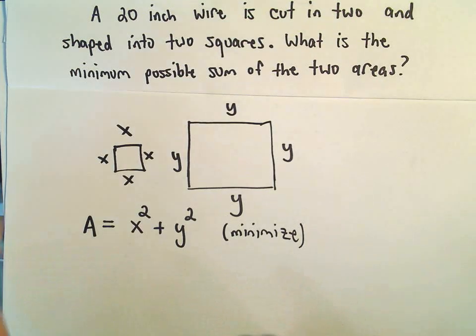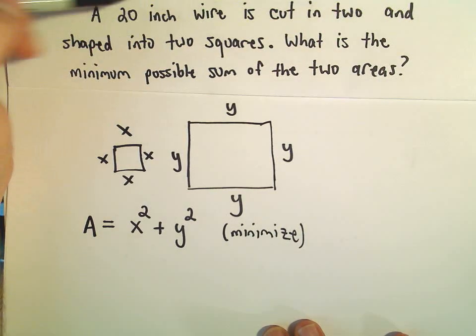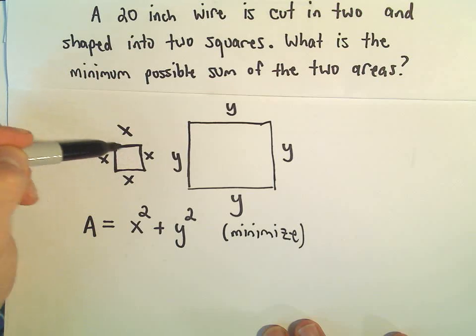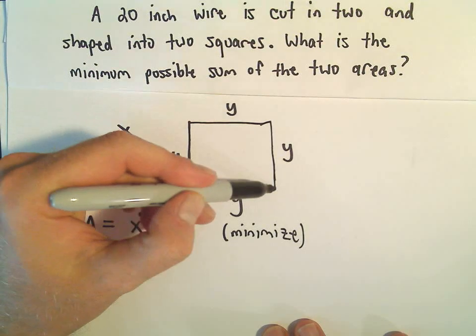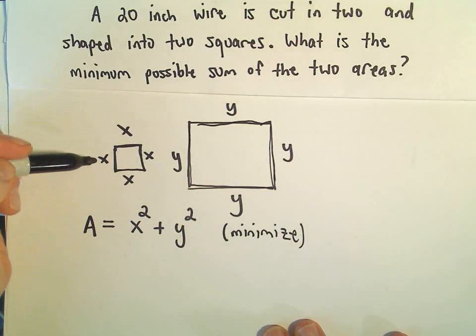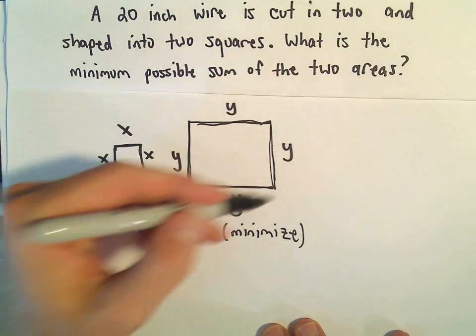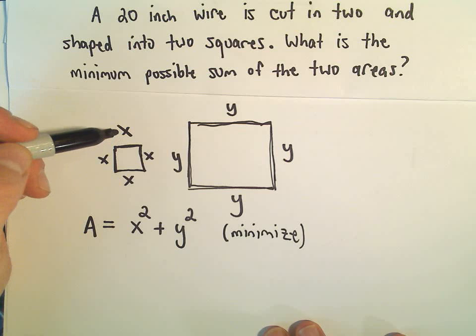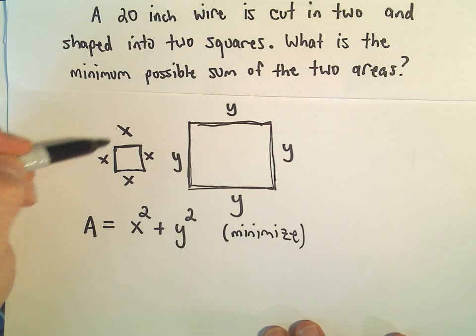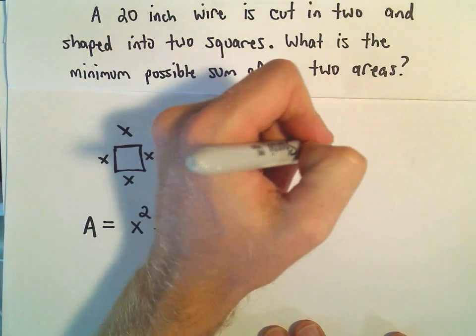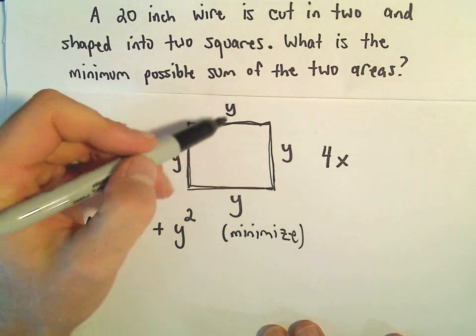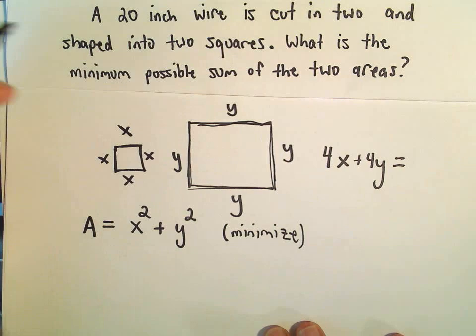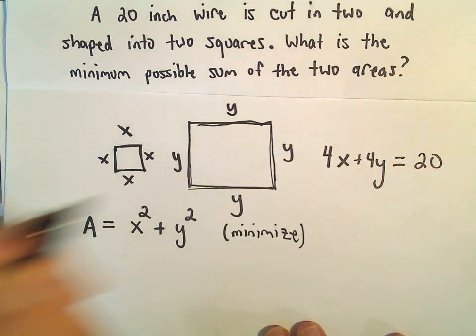And the thing we haven't related, the information we haven't used is the fact that we have 20 inches. So that means we've used 20 inches total around the edges. Well, it just means when we add up the perimeters of these two squares, it has to equal 20. So the perimeter of the first square would just be x plus x plus x plus x, so that would give us 4x. And then y plus y plus y plus y, that would be 4y. Again, we know that has to equal 20.